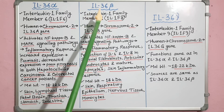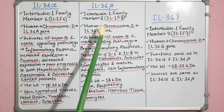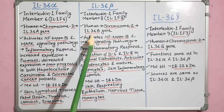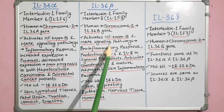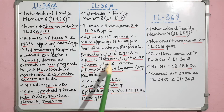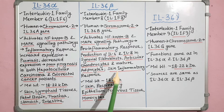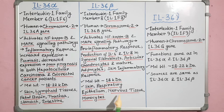Interleukin-36 beta is also known as interleukin-1 family member 8 or IL-1F8. In humans, it is encoded by the IL-36B gene of chromosome 2. It can activate NF-kB and MAPK signaling pathways in target cells, which are linked to a pro-inflammatory response. It stimulates production of IL-6 and IL-8 in synovial fibroblasts, articular chondrocytes and mature adipocytes. It is involved in skin inflammatory response by acting on keratinocytes, dendritic cells, etc. Molecular weight is about 18 kilodalton, and it is found in skin, respiratory epithelium, various nervous tissues and monocytes.